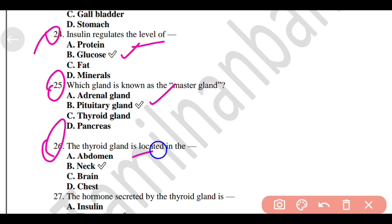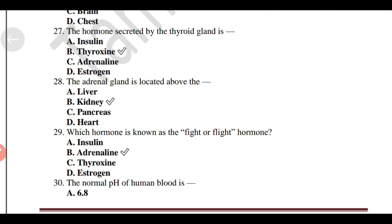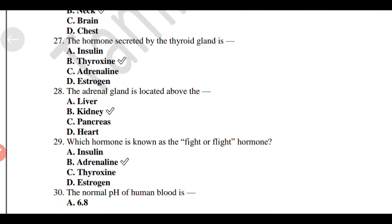The thyroid gland is located in the Option B, neck. The hormone secreted by the thyroid gland is Option B, Thyroxine.